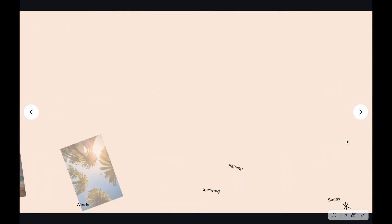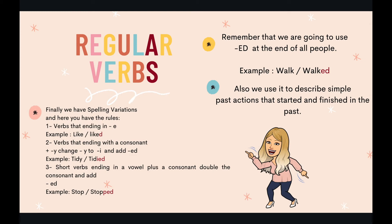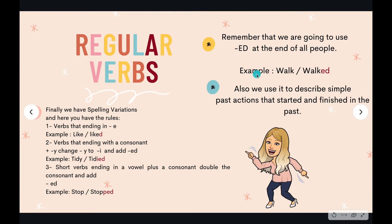Now let's continue with grammar — regular verbs. Remember we are talking about past simple actions. We are going to use the letters 'ed' at the end of verbs for all subjects: I, you, she, he, it, we, and they. Here we have an example — 'walk' is the base form, and to transform it into a past simple verb we add 'ed' at the end: 'walked.'